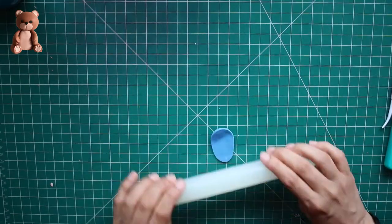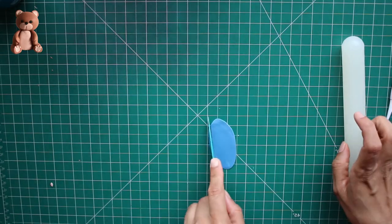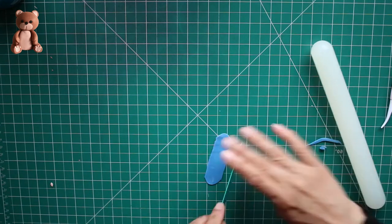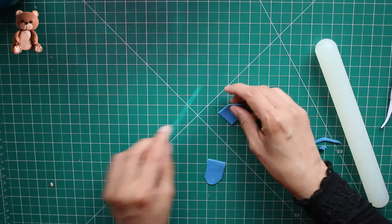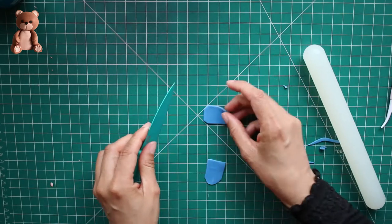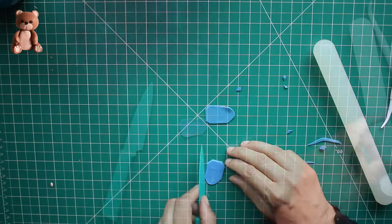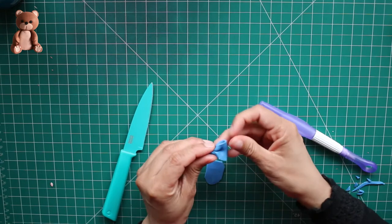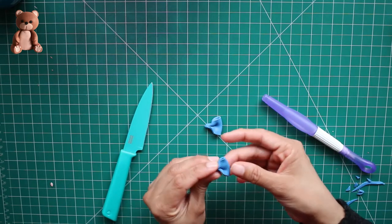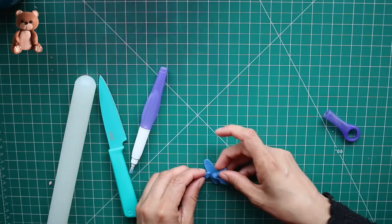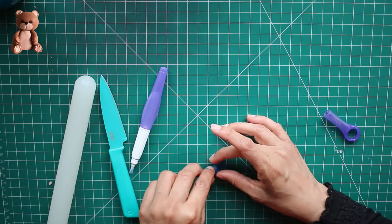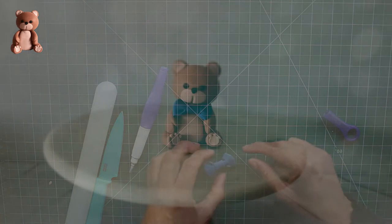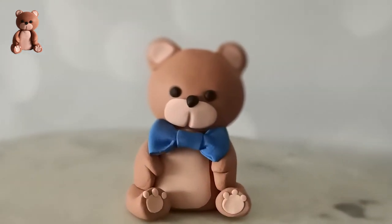Now to make a bow tie, slightly bigger in size this time using blue gum paste. And same process as to make a bow. And there's your boy teddy bear.